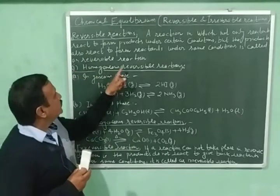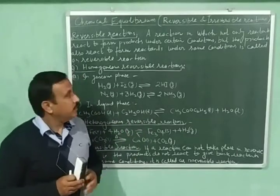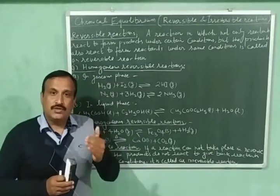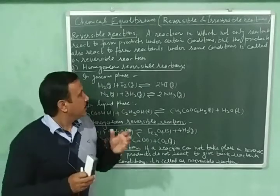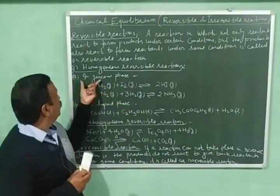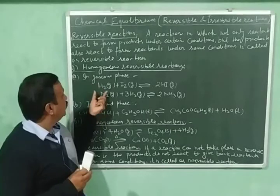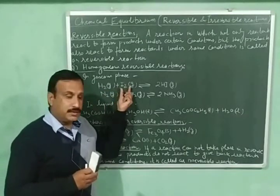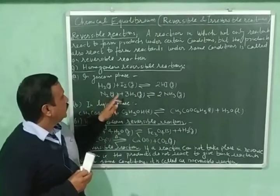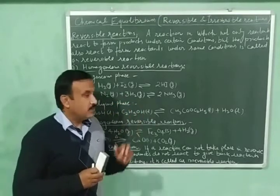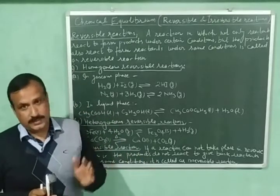Number one is homogeneous reversible reactions, and number two is heterogeneous reversible reactions. Homogeneous reversible reactions are those in which all the reactants and products are present in the same phase. Here are two examples of homogeneous reversible reactions occurring in gaseous phase. In the first example, one mole of hydrogen is reacting with one mole of iodine to give two moles of hydroiodic acid. In the second, one mole of nitrogen is reacting with three moles of hydrogen giving two moles of ammonia gas. In these reactions, all the reactants and products are present in the gaseous phase.